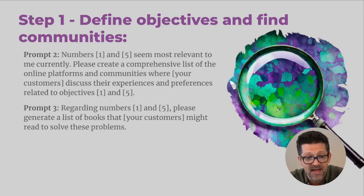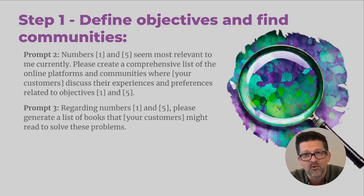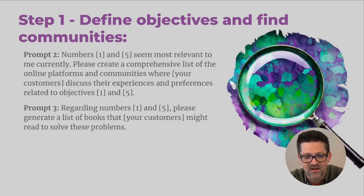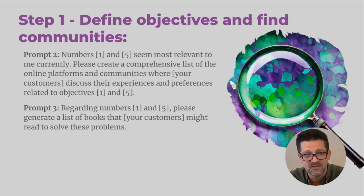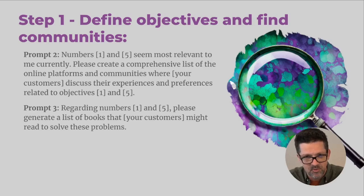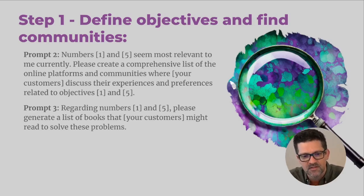Prompt number three: once you have that, you want to say 'regarding prompts number one and five, please generate a list of books that your customers might read to solve these problems.' Or you can put in there other products that people might buy to solve these problems if you're selling a physical product. These two prompts together are helping you capture all the different online platforms and communities — it's going to spit out things like Reddit, Quora, Twitter, Facebook groups, LinkedIn groups, and G2. Prompt three gets you a list of books or physical products your audience is really using related to whatever problem you're helping them solve.